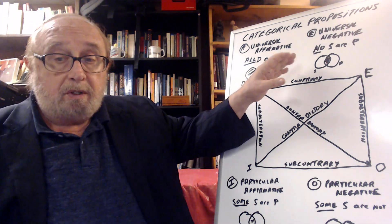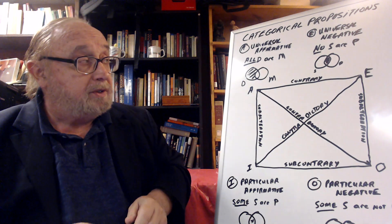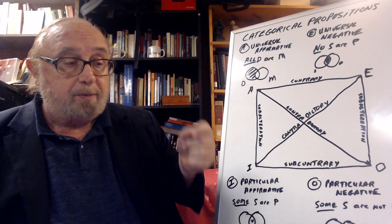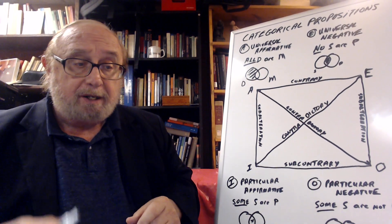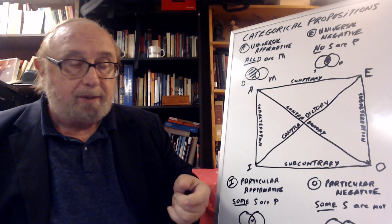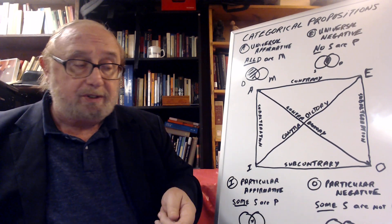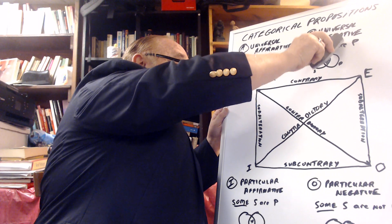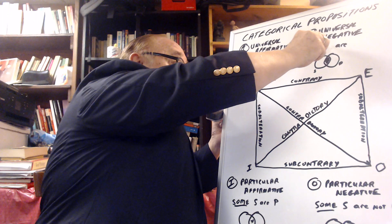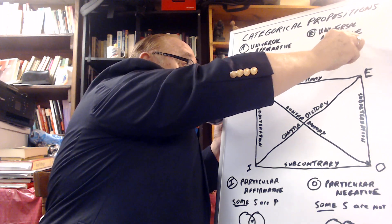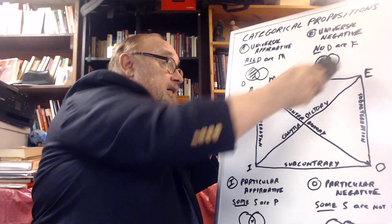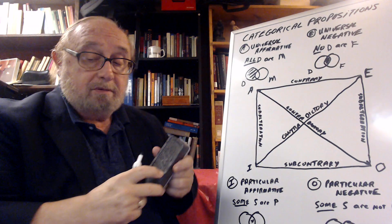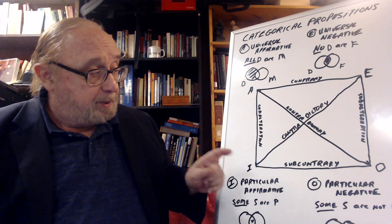The universal negative, no S are P, means that where the two circles overlap — the subject and predicate circles overlap — there's nothing there. It's dark. So S and P stand for subject and predicate. The subject is the main focus of what you're talking about, and the predicate is what modifies or relates to it. So in a sentence, Jim is big — Jim is the subject, big is the predicate. Big is an adjective or adjectival phrase which tells you something about the subject. So if we say no dogs are fish, we can write no D are F.